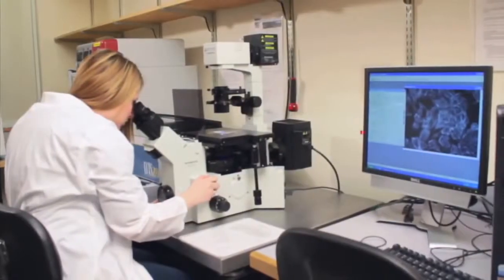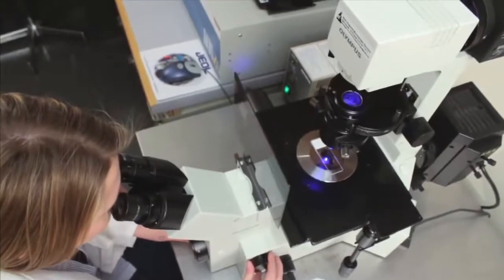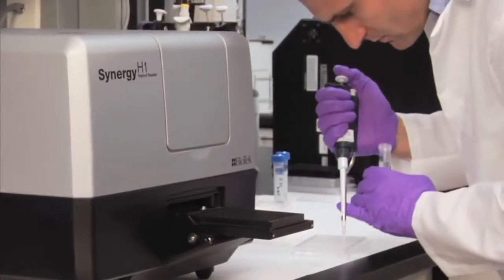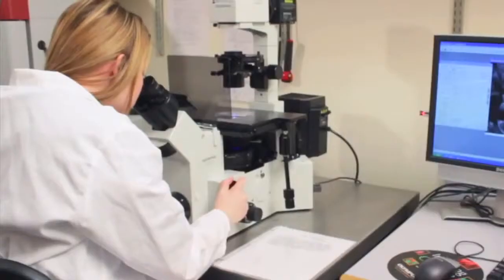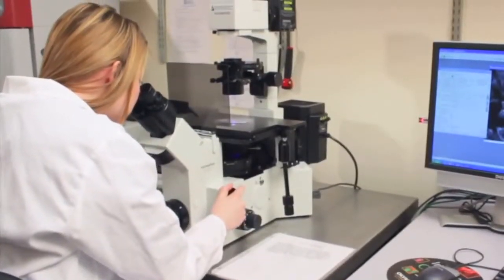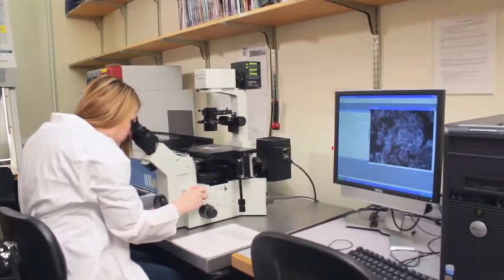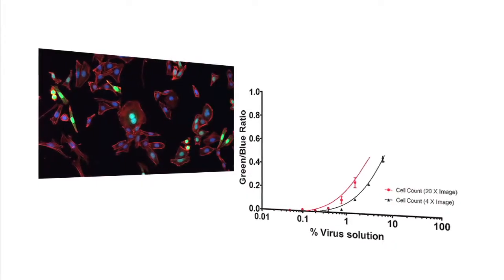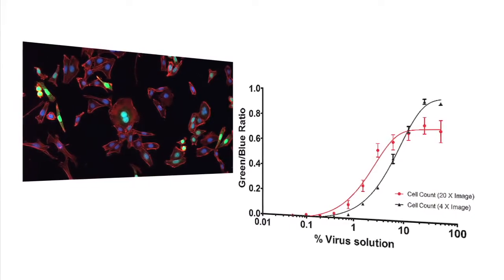Fluorescence microscopy is a powerful technique for visualizing cellular responses in cell biology research. Multi-mode microplate detection is a common method for rapid quantification of cellular activities in microplates. Typically, these two techniques are performed in separate instrumentation and require independent analysis. However, many cell-based assay workflows would benefit from the ability to automatically acquire quantitative data and rich phenotypic cellular information in parallel.